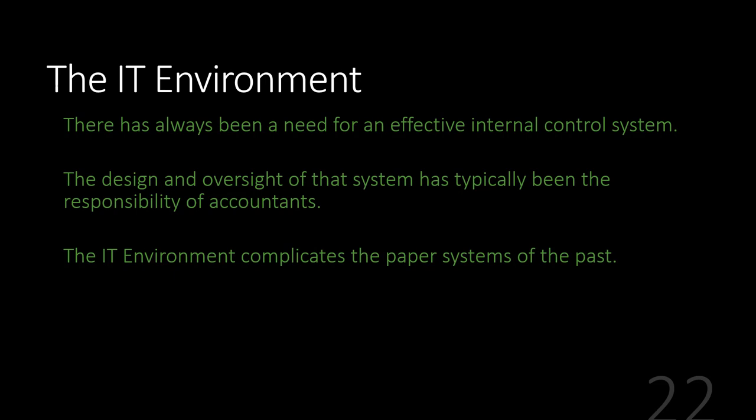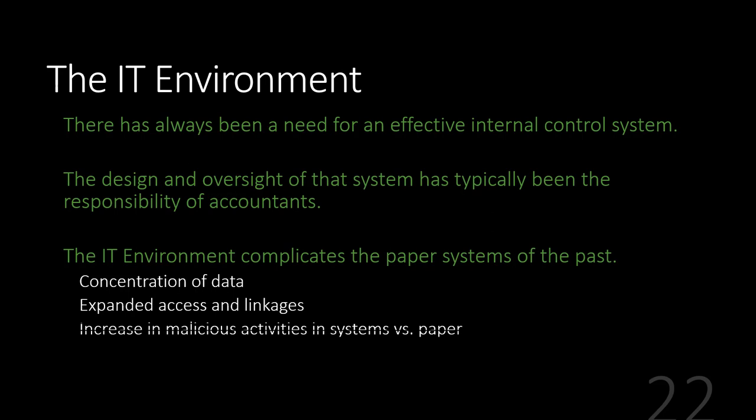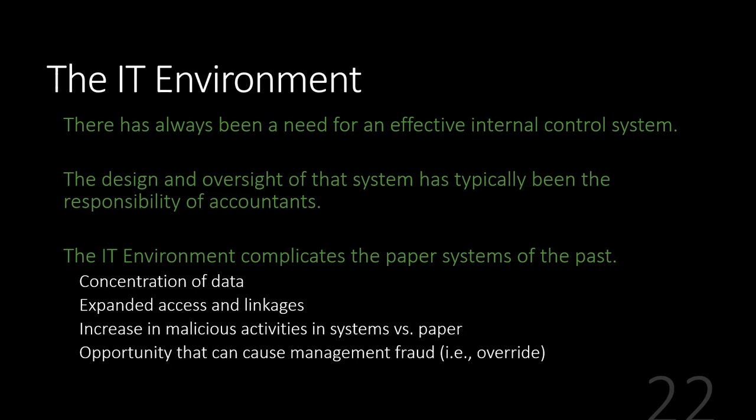Data is concentrated and expands rapidly. We have access to data from all over the place now. Corporations allow their employees to work from home or remote sites, which means they don't have to physically be in the office and unlock that filing cabinet — all they need is a way to get into the servers. So there are a lot more malicious activities that can take place with this electronic access, and it allows management to commit fraud by overriding controls as well.